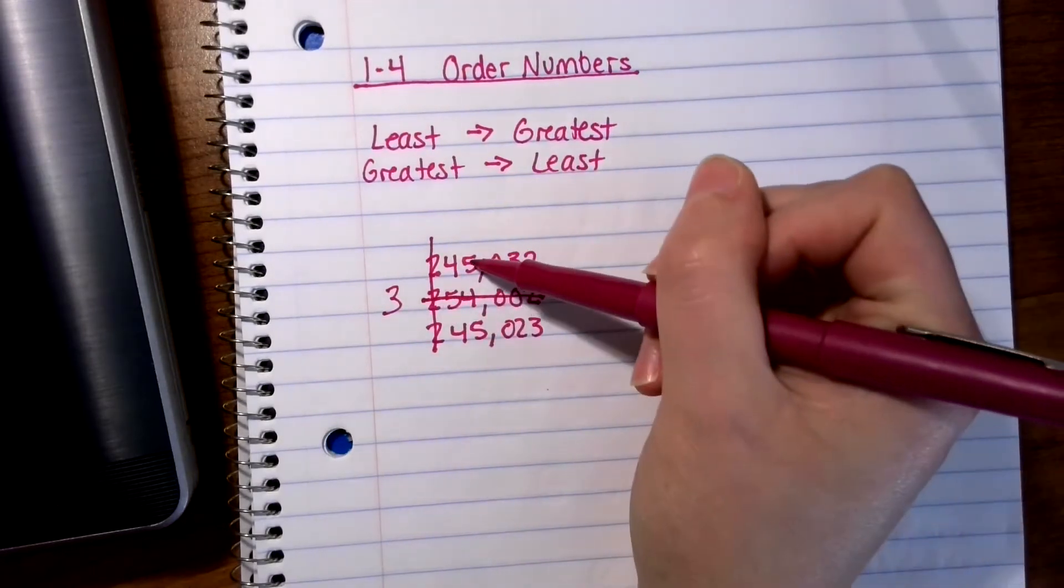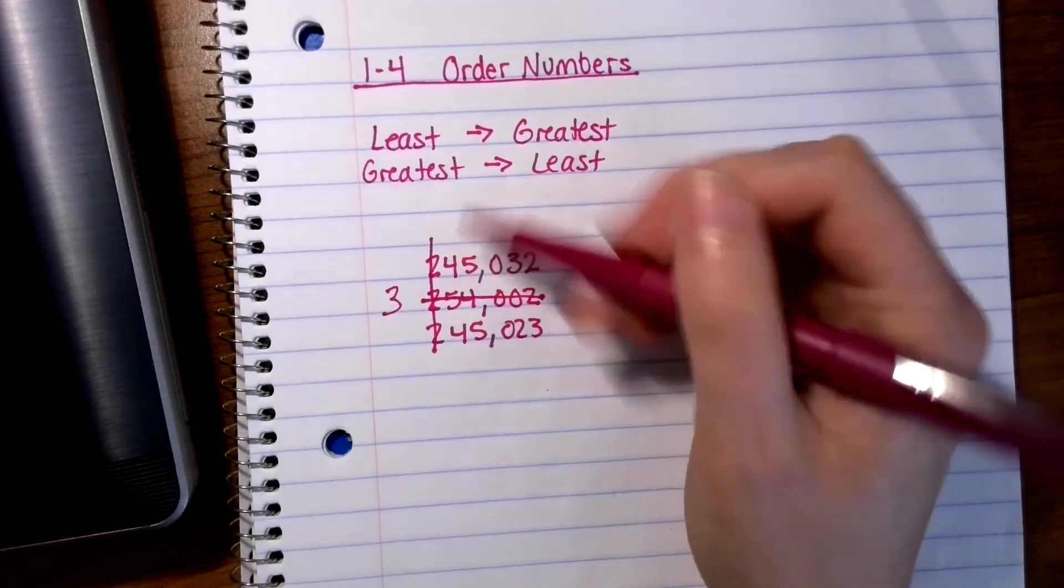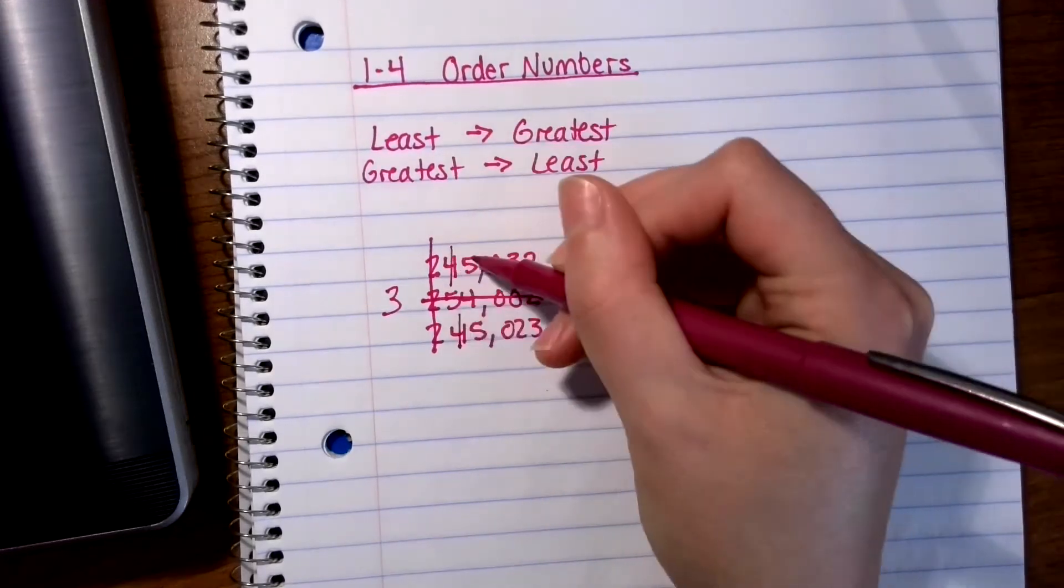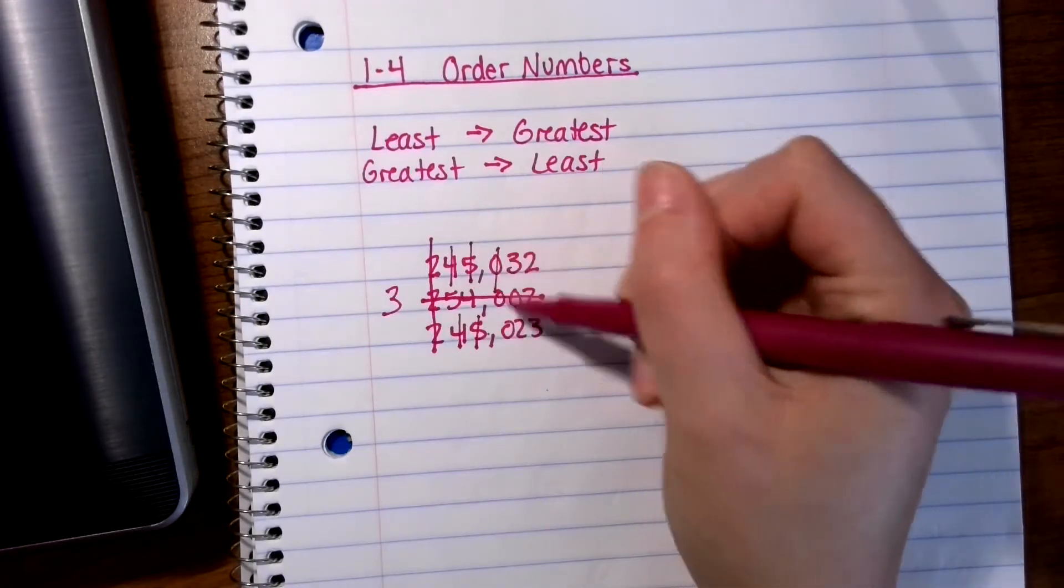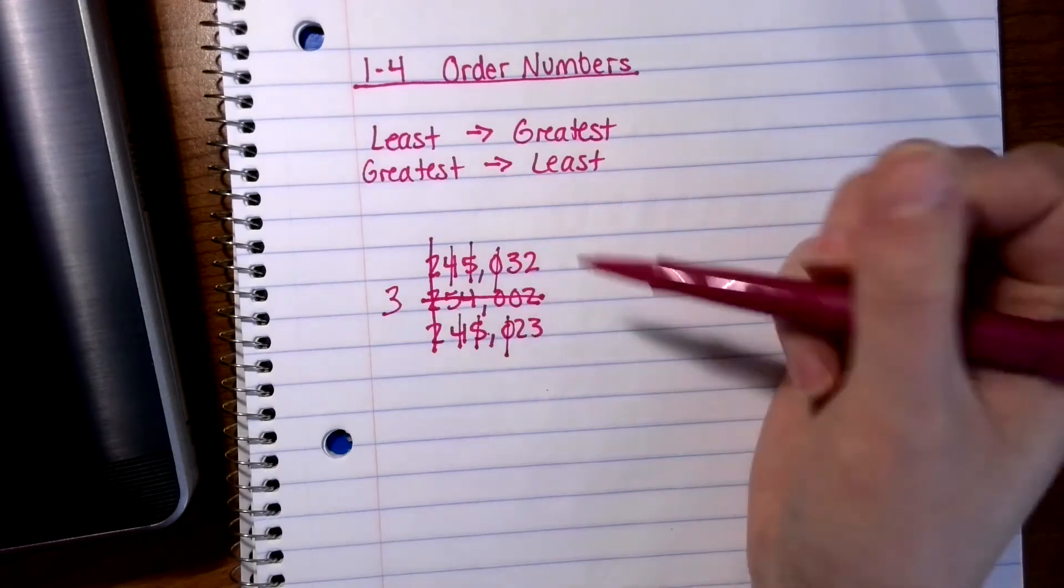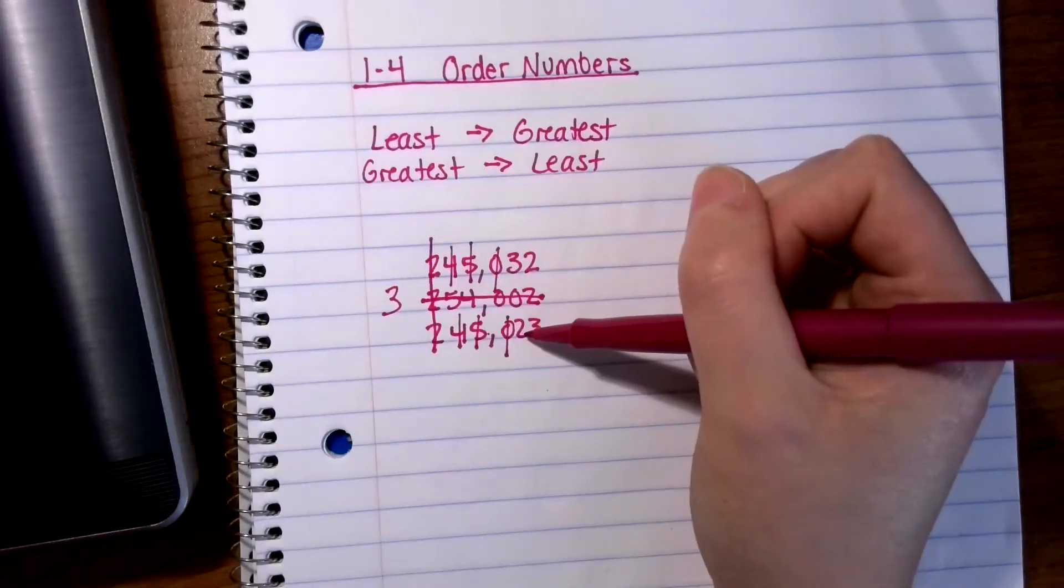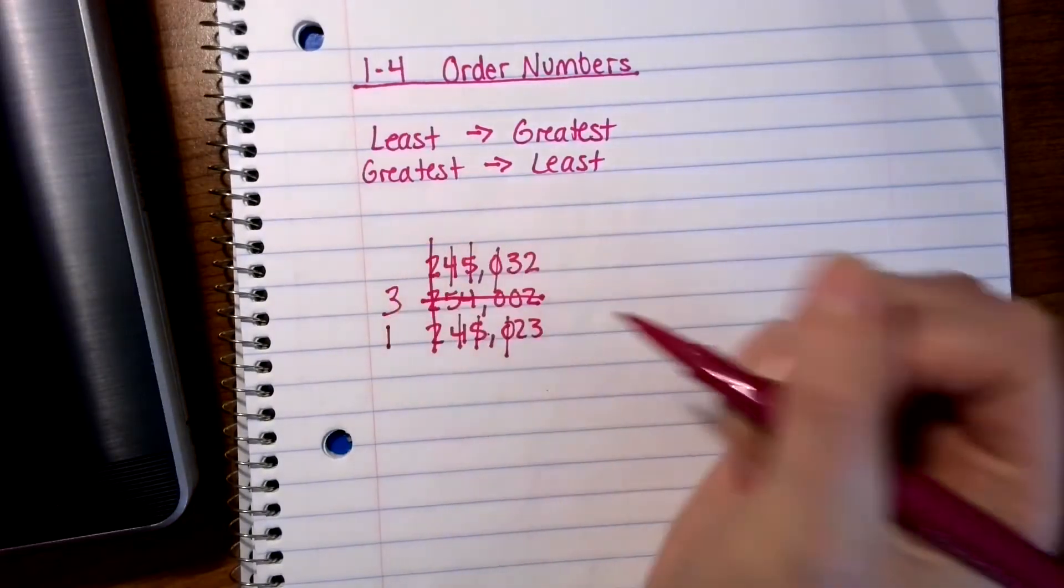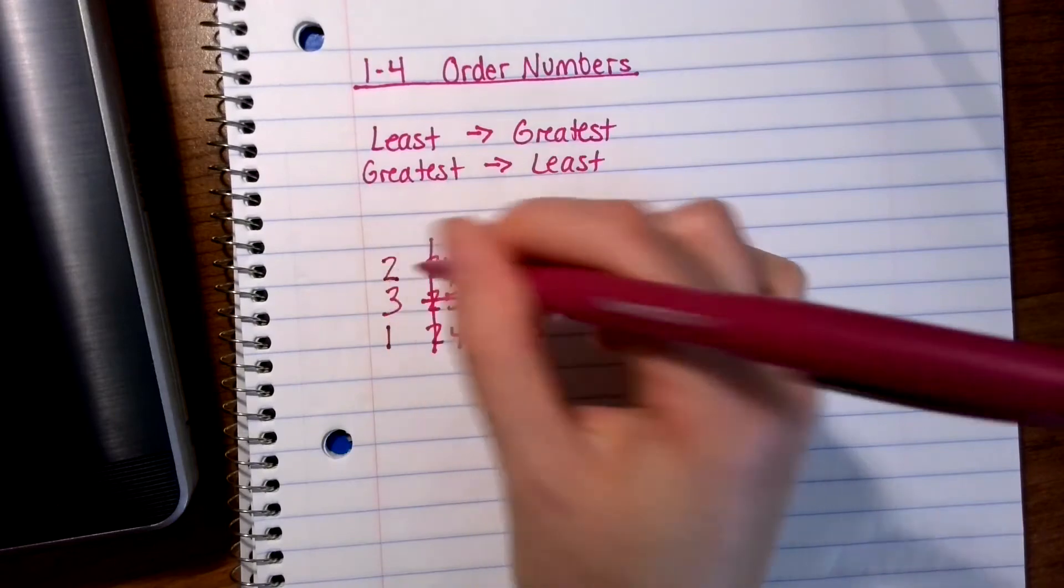Only numbers I'm comparing are the first one and the last one. So four and four are the same. Five and five are the same. Zero and zero are the same. Ooh, I have three and two. Three is bigger. And two is smaller. So this is going to be my smallest number. I'll label it as one. And this will be my second smallest number. So I'll label it as two.